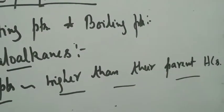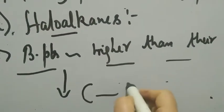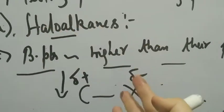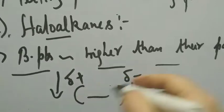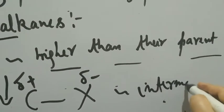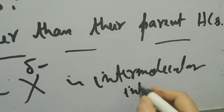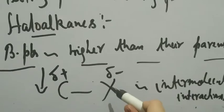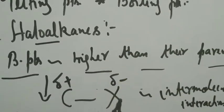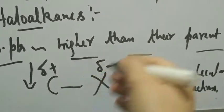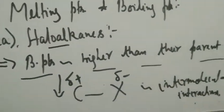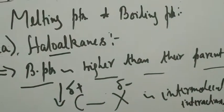The reason is the nature of the C–X bond — it is a polar bond, with a negative pole on X and a positive pole on C. The dominant parameter in determining boiling points and melting points is intermolecular interaction. Since the molecule has a polar bond, there are dipole-dipole interactions between molecules, which is why the boiling points and melting points of haloalkanes are higher than their parent hydrocarbons.